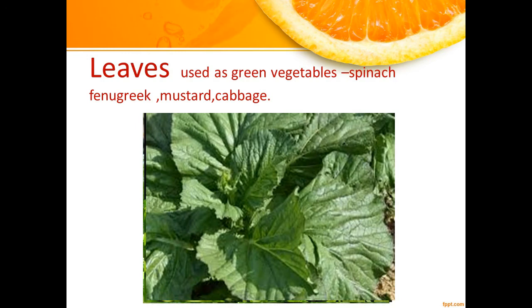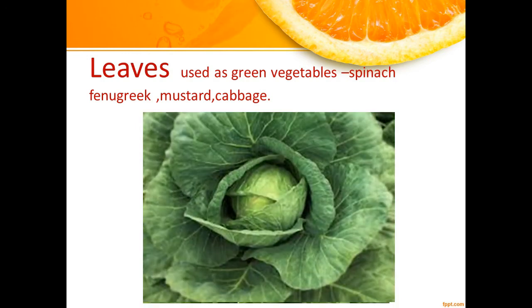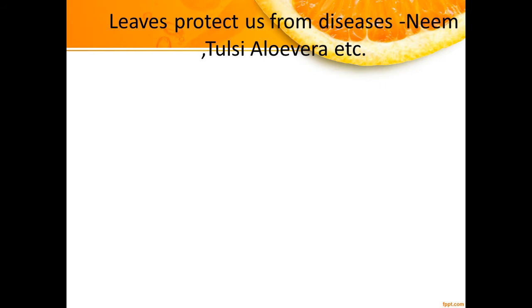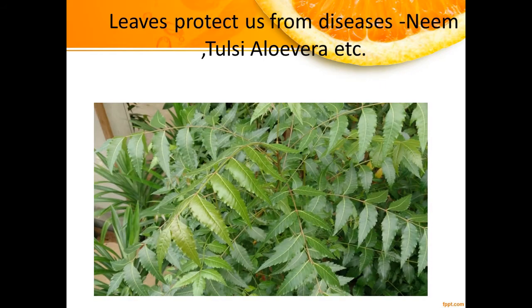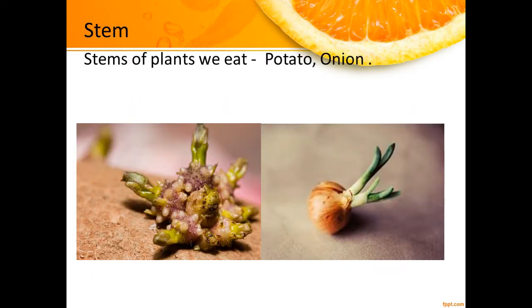Other leafy vegetables include fenugreek, mustard, and cabbage. The leaves of plants like bean, tulsi, and aloe vera protect us from various types of diseases and also boost our immune system. Now let's know about the stems of some plants we eat in our daily life.